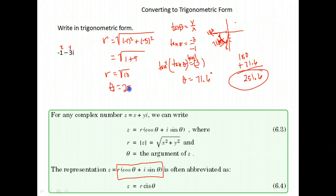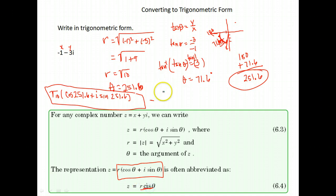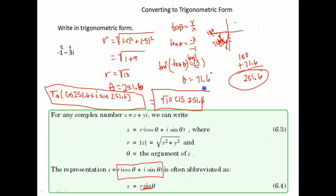So r is the square root of 10 and theta is 251.6 degrees. In trigonometric form: square root of 10 times cosine of 251.6 plus i times sine of 251.6. The abbreviated form is the square root of 10 cis 251.6 degrees. Those are two different ways to write this answer.